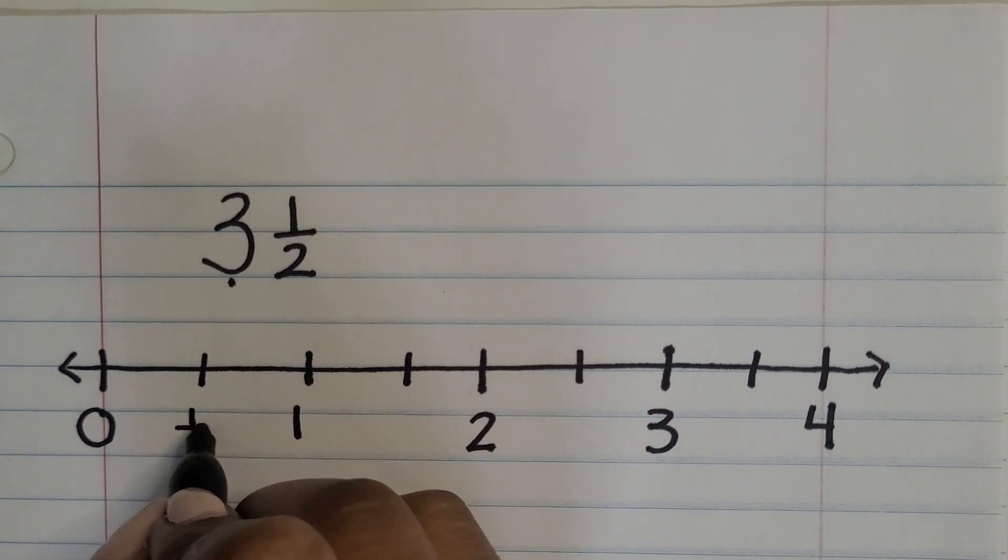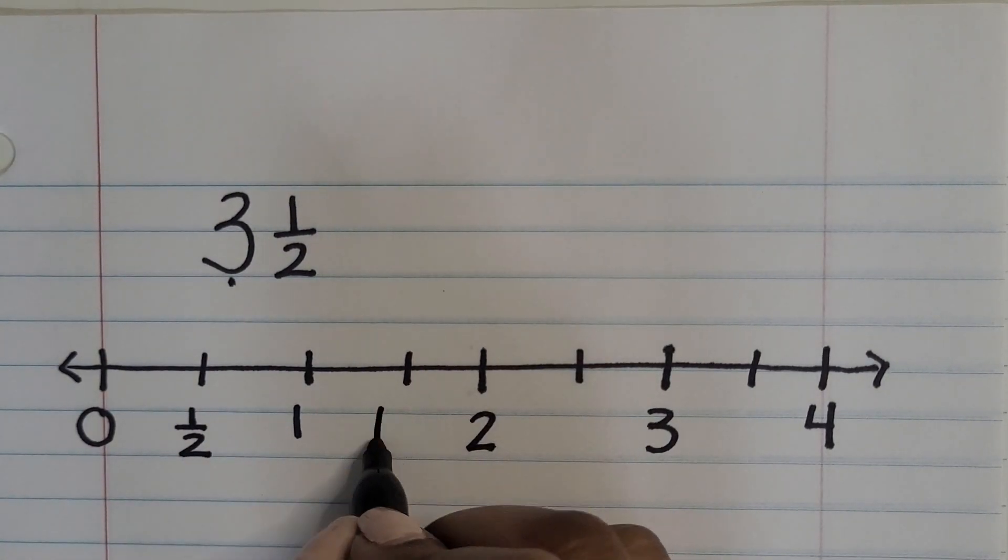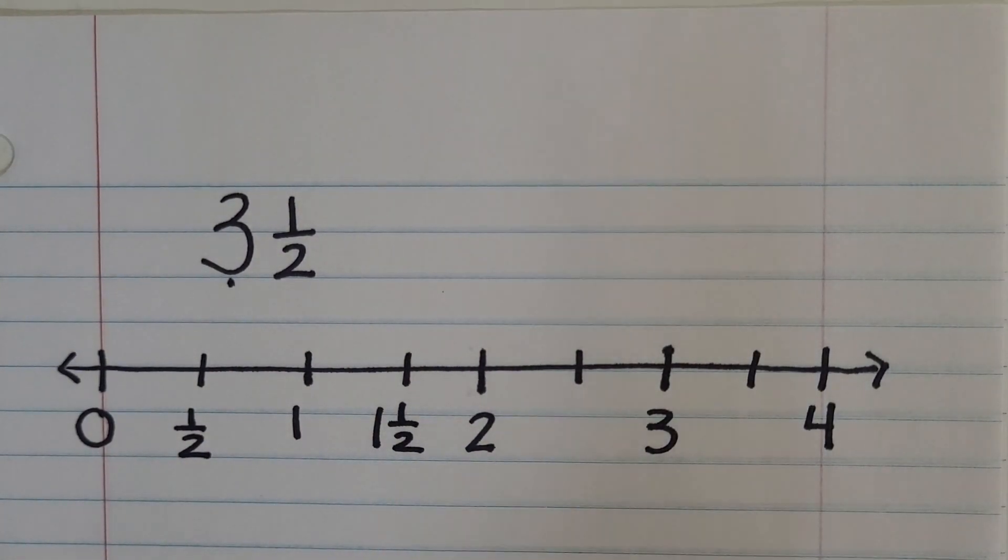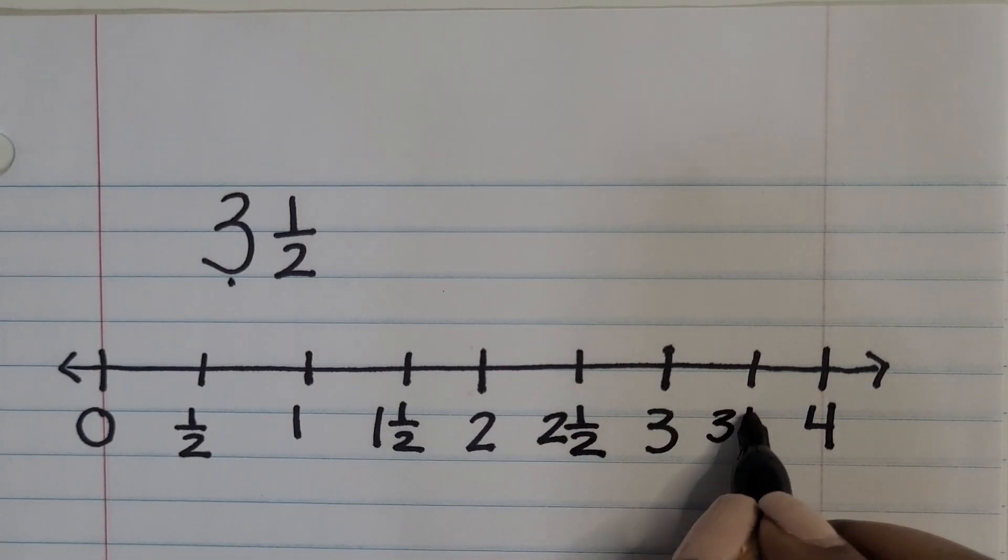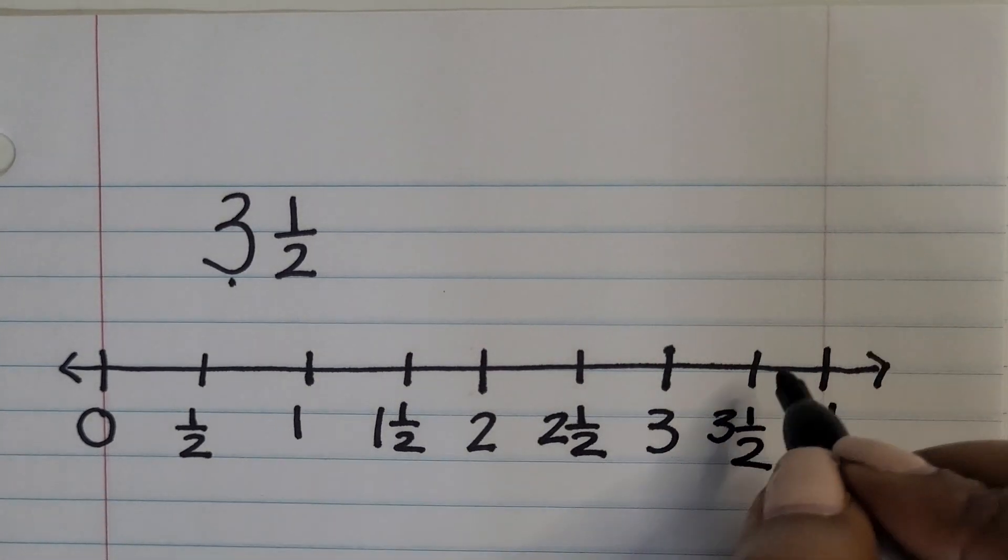Starting at zero we'll count out each half. One half, one hole, one and one half, two holes, two and one half, three holes and then three and one half is where we need to get to.